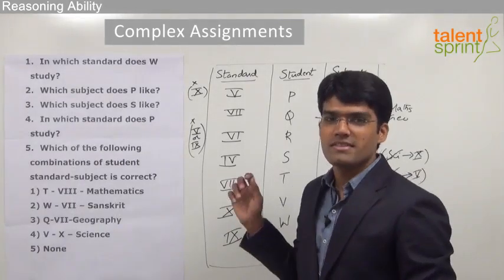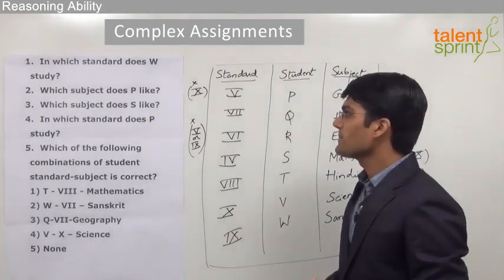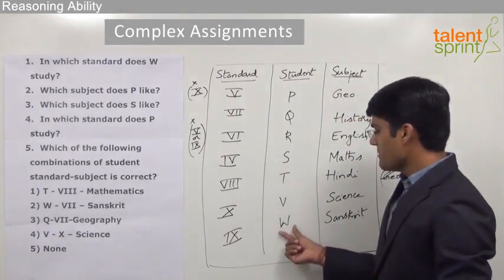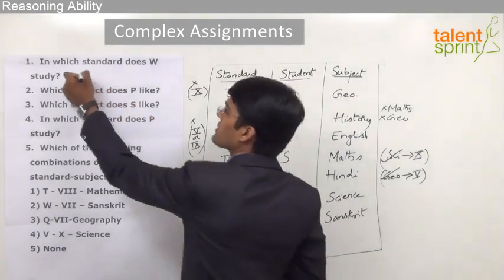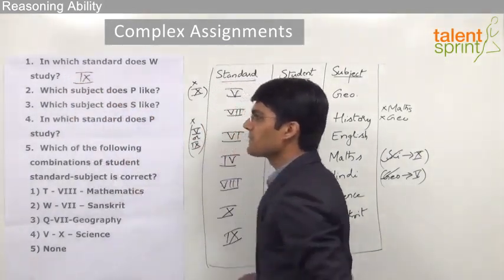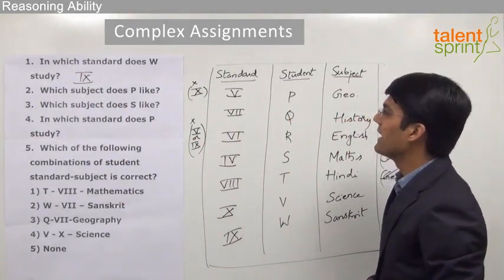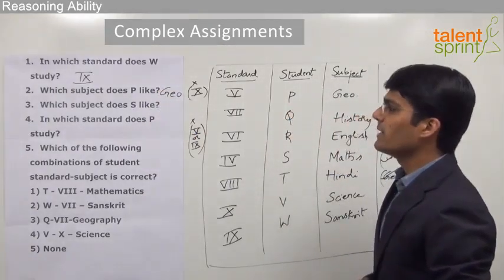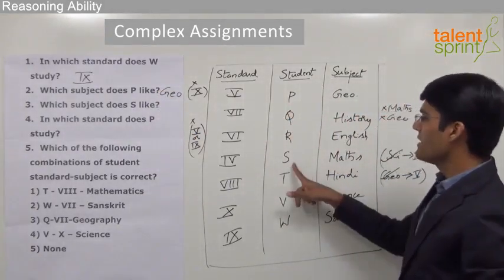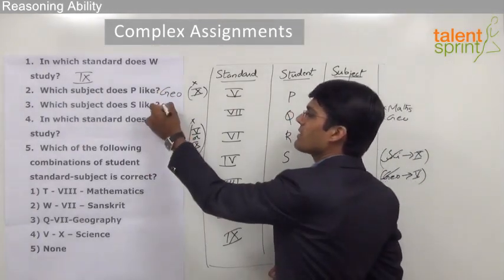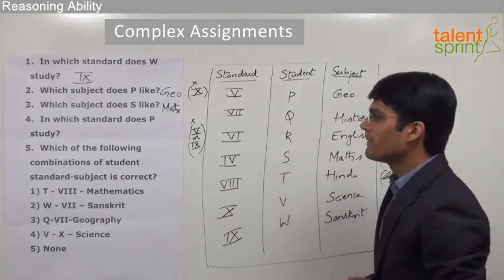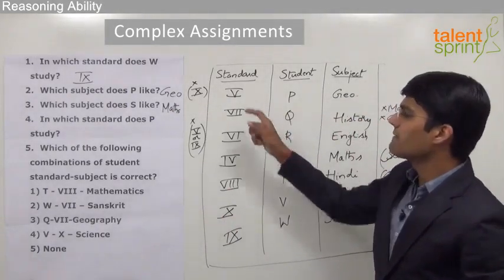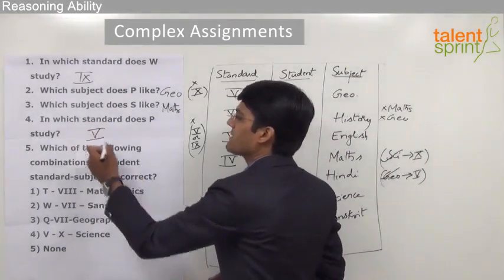Let us now look at the various questions asked for this assignment. The first question is: in which standard does W study? From the assignment, W studies in 9th standard, so the answer for question 1 is 9. The second question is: which subject does P like? P likes geography, so the answer for question 2 is geography. The third question is: which subject does S like? From the assignment, S likes mathematics, so the answer for question 3 is mathematics. The fourth question is: in which standard does P study? P studies in 5th standard, so the answer for question 4 is 5th standard.